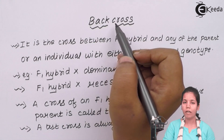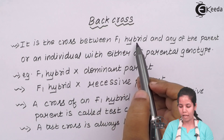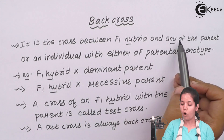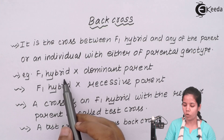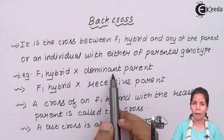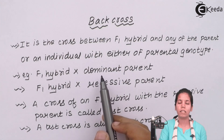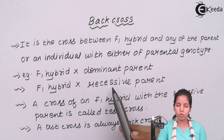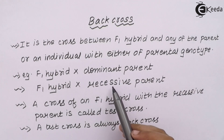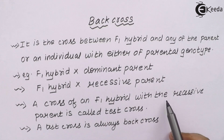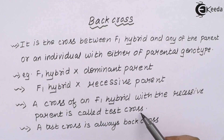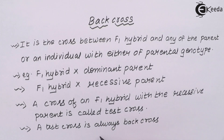Back cross is a cross between the F1 hybrid and any one of the parents, or an individual with either of the parental genotype. For example, the F1 hybrid could be crossed with the dominant parent which is capital T capital T, in the case where we are measuring the height of the plant, or it could be crossed with small t small t. A cross of the F1 hybrid with the recessive parent is also called a test cross. Test cross is always a back cross, but it is specifically used to find the progenies of that generation.